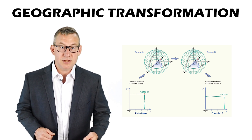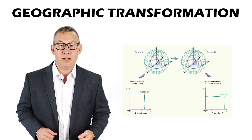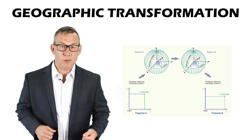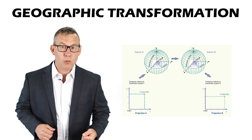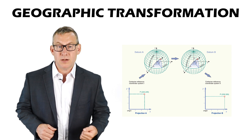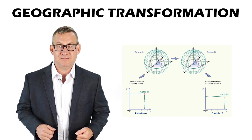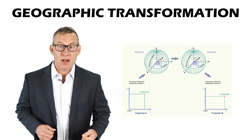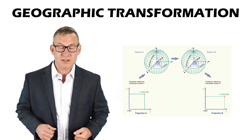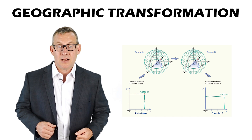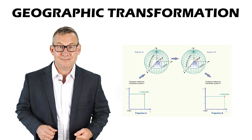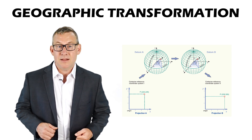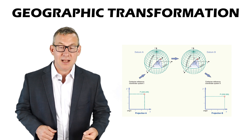A geographic transformation transforms coordinate locations between geographic coordinate systems such as NAD 27, NAD 83, and WGS 84. It usually requires converting to a Cartesian XYZ coordinate system and back, and often changes the datum used. Common geographic transformation methods include the 3-parameter model, the 7-parameter model, the Molodenski method, the Helmert transformation, and the NADCON and HARN methods.